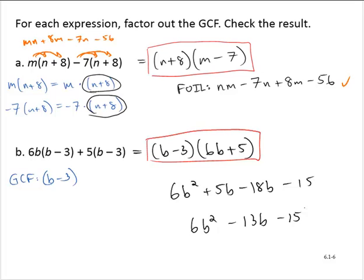Now let's go back to our original expression and apply the distributive property. 6b times b is 6b squared; 6b times negative 3 is minus 18b; plus 5 times b is plus 5b; plus 5 times negative 3 is minus 15. Notice we have the same four terms and get the same simplified expression, so we can check that out.